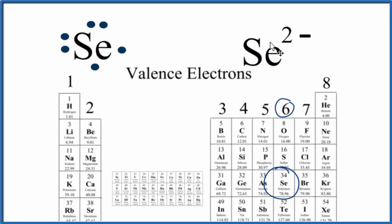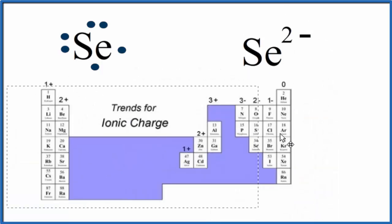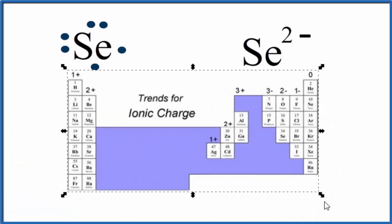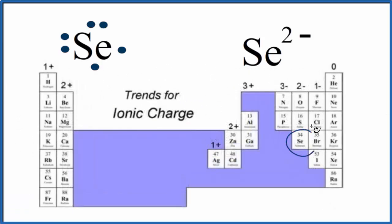But if we have an ion — in this case this is our ion because we have this ionic charge, this 2 minus up here — we need to draw a different Lewis structure. If we look at the periodic table organized by ionic charge, we can find Se again here. It has a 2 minus ionic charge, just like we have written up here. You can see the trend for ionic charge on the periodic table as well.